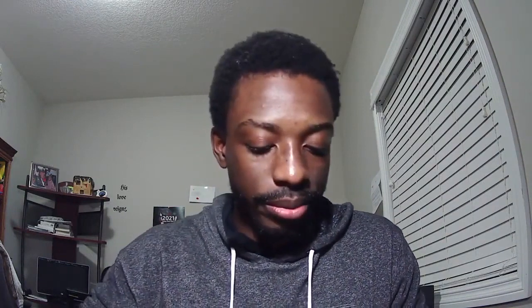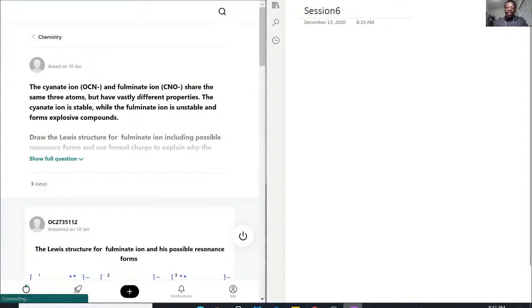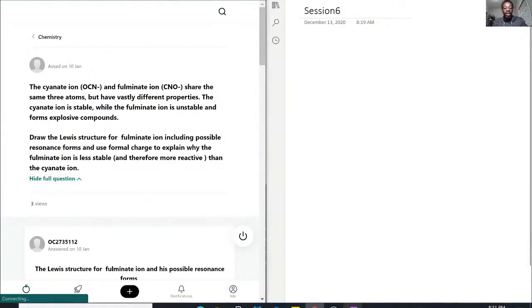For question 1, the cyanate ion OCN and fulminate ion CNO share the same three atoms but have vastly different properties. The cyanate ion is stable, while the fulminate ion is unstable and forms explosive compounds. So we want to draw the Lewis structure for fulminate ion, including possible resonance forms, and use formal charge to explain why this is less stable and therefore more reactive than the cyanate ion.